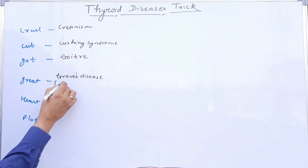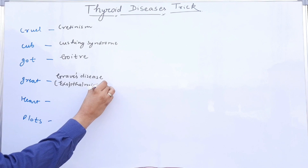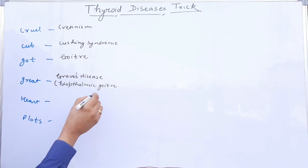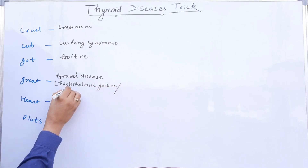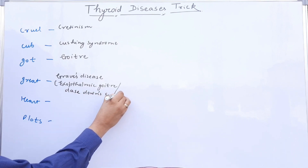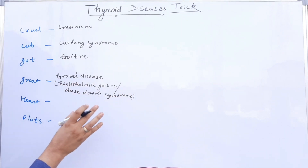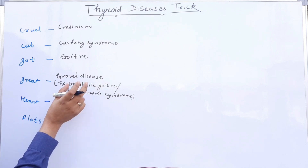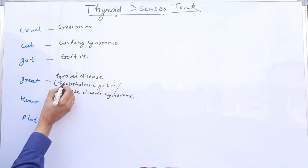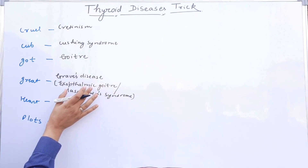Graves disease is also known as Exophthalmic Goiter, or it is also known as Days Down syndrome — it has three names. Exophthalmic means the eyes protrude out of the face; the eyes look larger in size compared to their original size due to the accumulation of water.